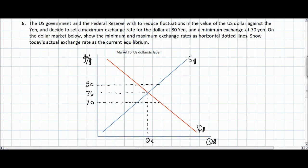Next we're going to see what would happen if the market equilibrium exchange rate of the U.S. dollar were to increase above 80 yen per dollar or fall below 80 yen per dollar, and we'll examine ways that the U.S. central bank can maintain its managed exchange rate in the range between 70 and 80 yen per dollar.